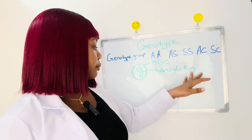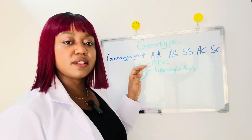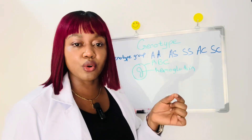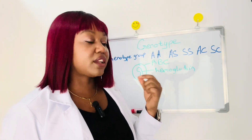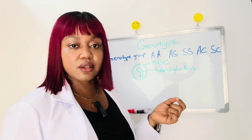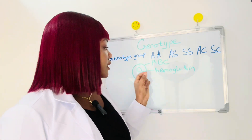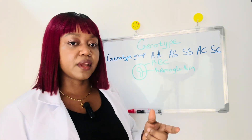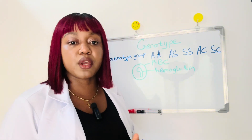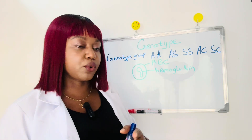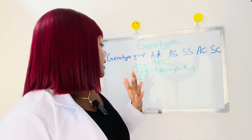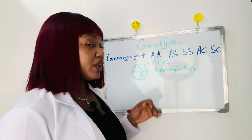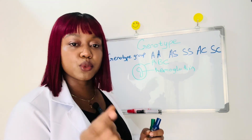In the red blood cell, the most important part we'll be talking about is the hemoglobin. This hemoglobin is a small tiny structure. Its function — it's red in color, and it's what gives the red blood cell its red color. The main function of the hemoglobin is to bind with oxygen and help the red blood cell transport oxygen in the body.